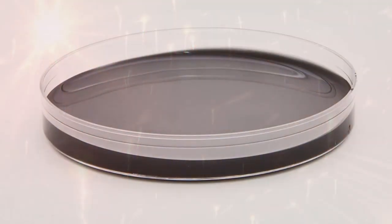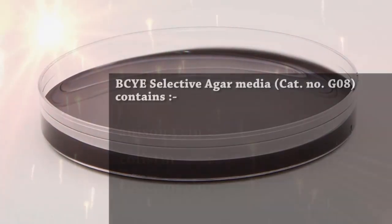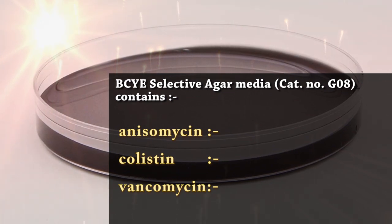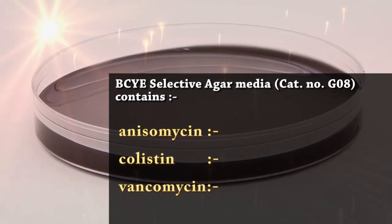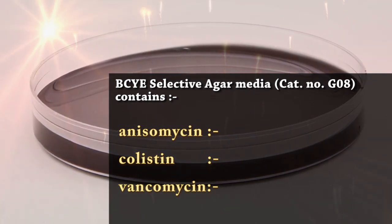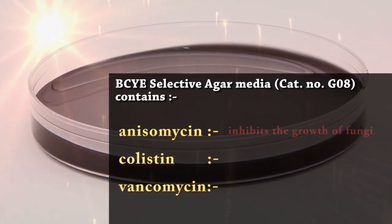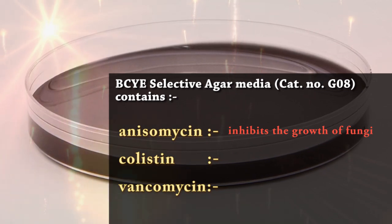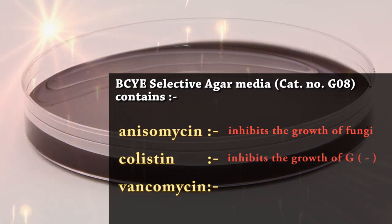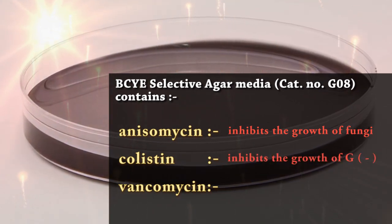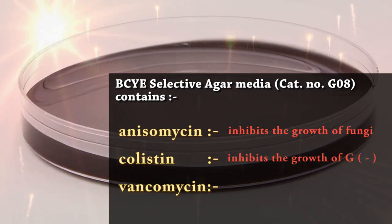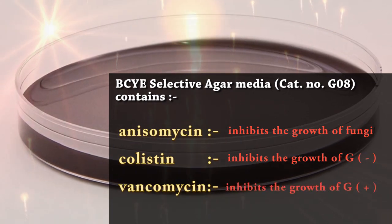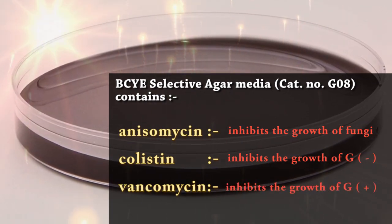BCYE Selective Agar media contains anisomycin, colistin, and vancomycin. Anisomycin inhibits the growth of fungi. Gram-negative organisms are inhibited by colistin. Gram-positive organisms are inhibited by vancomycin.